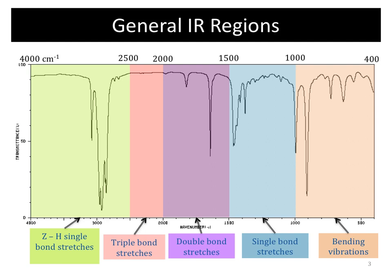Here are just a few key regions. Starting at the right, 400 to about 1,000 is where we see bending vibrations — we often don't read a lot into that. Likewise, 1,000 to 1,500 has a few things we can pull out, but we won't discuss those here. Above 1,500 is our primary region. In the 1,500 to 2,000 range is where you're going to see double bonds — be it C=C, C=O, or even aromatic double bonds.